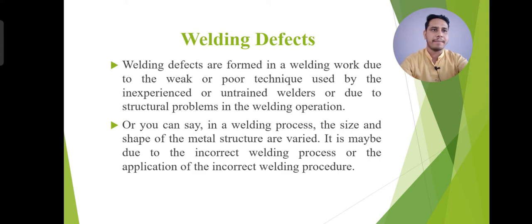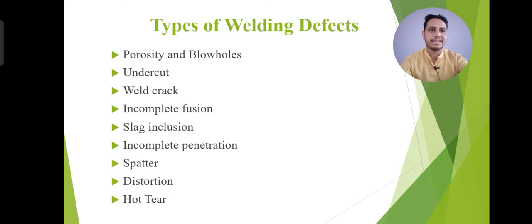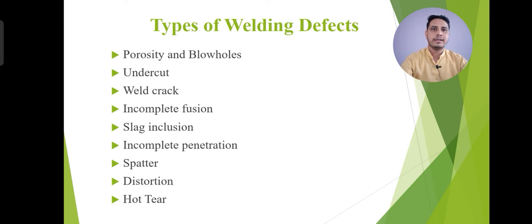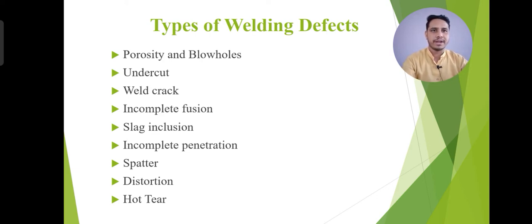There are many types of several defects such as porosity and blowholes — this is a very central type of welding defect. Another one is the undercut. Weld crack is also a type of welding defect. Incomplete fusion is an important type of welding defect, and slag inclusion, incomplete penetration, spatter, distortion, and hot tears are also examples of different types of welding defects.